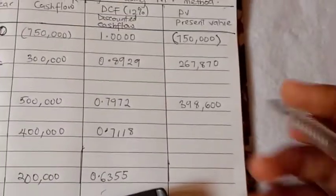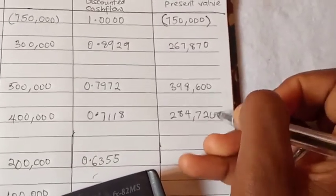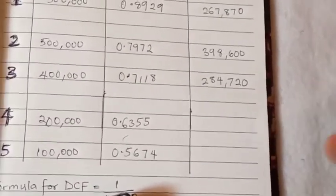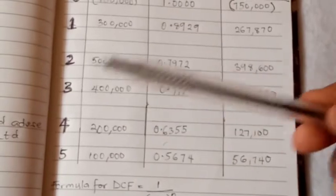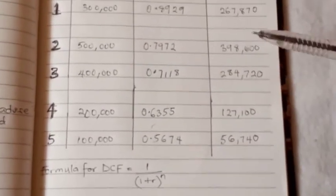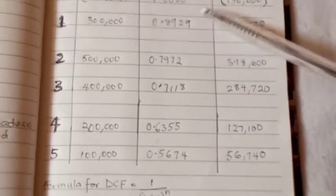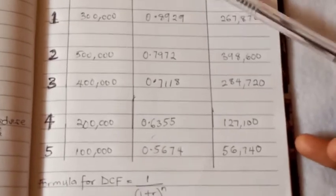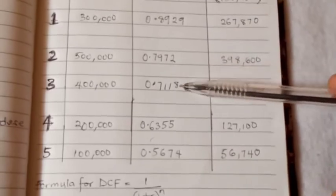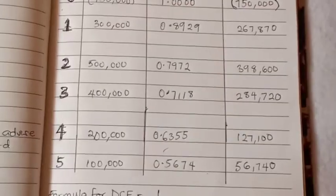The third year, 400,000 multiplied by 0.7118, which is 284,720. That's how you do for the remaining years. So I'm done multiplying for each year. This is what you get. If you don't get this, maybe you're wrong somewhere. And don't forget, in your discounted cash flow, you're free to approximate.